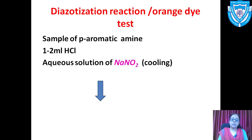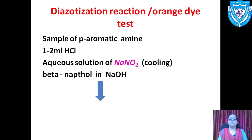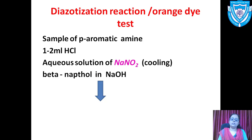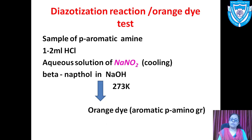This solution is then added to another test tube containing β-naphthol in NaOH. When you add this solution to β-naphthol in NaOH, you get an orange dye stuff. This orange dye is used for the detection of a primary amino group in aromatic amines.